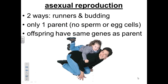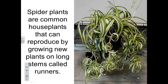Many plants can reproduce without sperm cells and egg cells. This kind of reproduction is called asexual reproduction. In asexual reproduction there is only one parent. Since all genetic information comes from one parent, the offspring will normally have the same genes as the parent. Many plants can reproduce asexually by growing new plants from their stems or roots. Spider plants are common house plants that can be reproduced by growing new plants on long stems called runners. Strawberries also can reproduce in this way, and many types of grass will spread by growing new plants from underground roots. All of these plants can also reproduce with seeds.